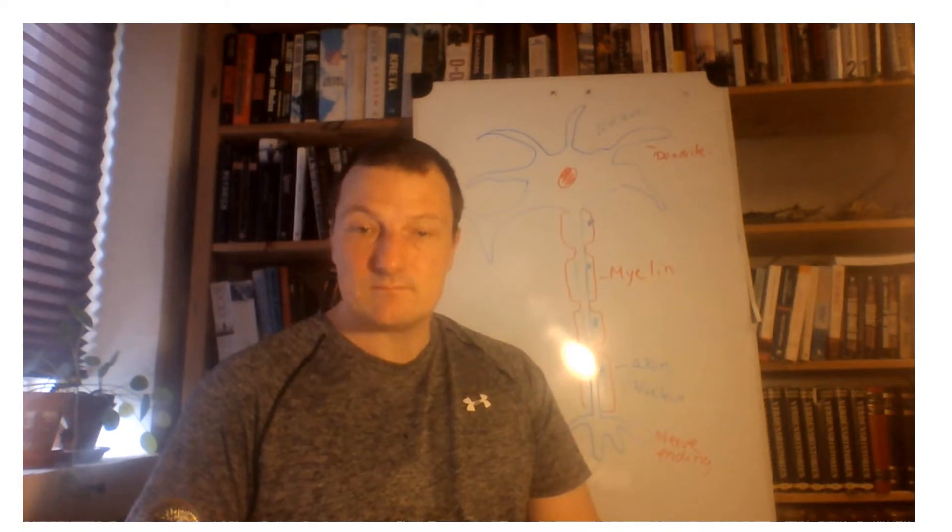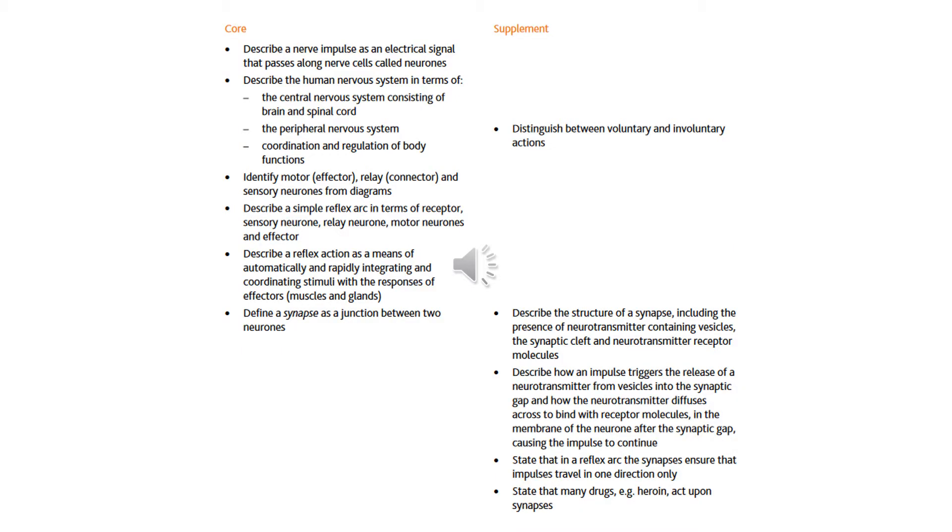As you can see, both in the core and the supplement, there are quite a few new things we have to learn, especially about nervous signals and neurons. In the core, it's mainly about how the human nervous system works. We're going to talk about the central nervous system and the peripheral nervous system and coordination response. You're going to learn how to work with motor, relay, and sensory neurons and how to describe a simple reflex arc. We also need to know what a synapse is doing in a neuron.